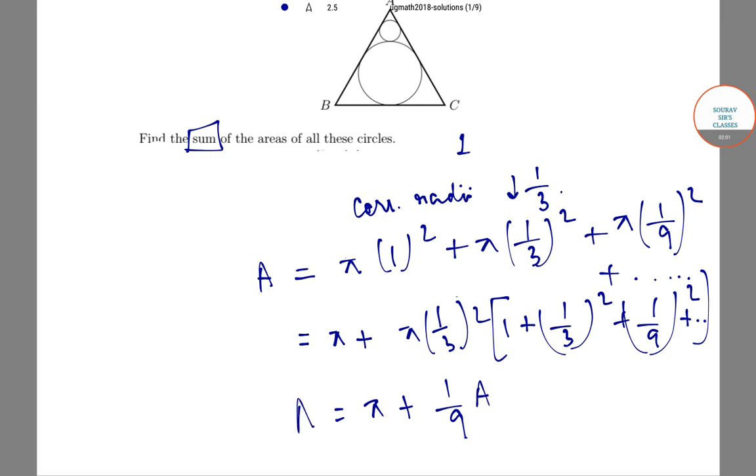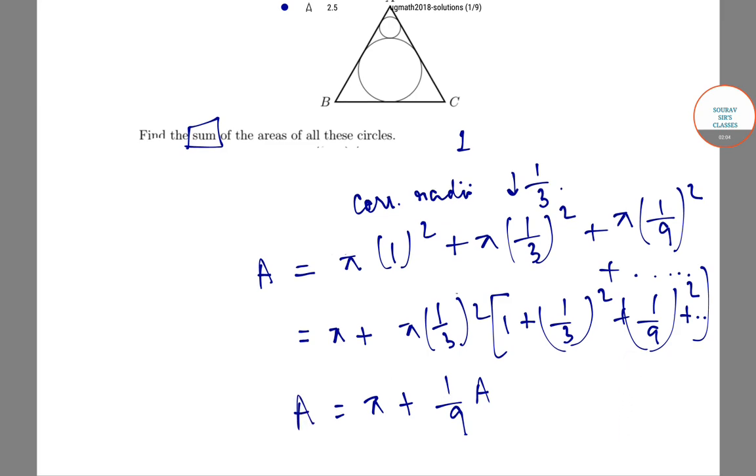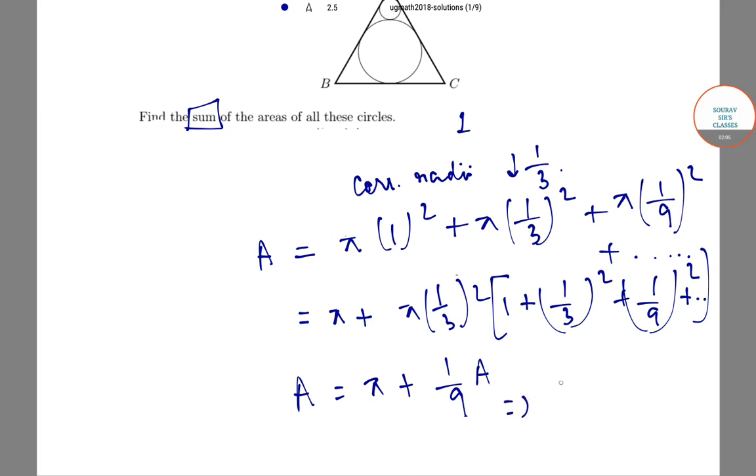Since A = π + (1/9)A, we get (8/9)A = π, or A = 9π/8.